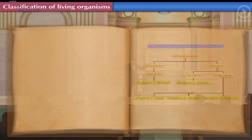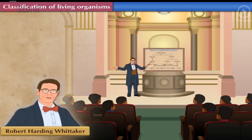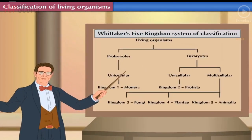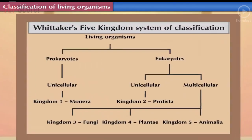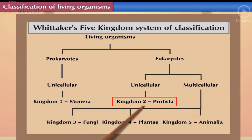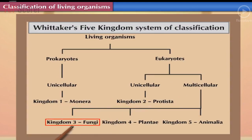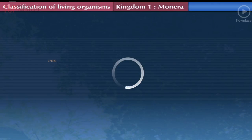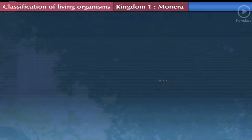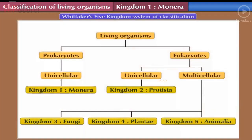After learning about Whittaker's five kingdom system of classification, this year we will study only three kingdoms — Kingdom Monera, Kingdom Protista, and Kingdom Fungi — in detail. Let us start with Kingdom 1: Monera.